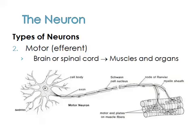We also have a motor neuron, or efferent neuron — those terms are used interchangeably. This is an example of a motor neuron where we have a very large cell body, a long axon, and the axon terminals innervating muscle fibers. For motor neurons, the neural impulse or electrical signal comes from the brain or the spinal cord, and that information is transmitted down to the level of muscle, organ, or glands.